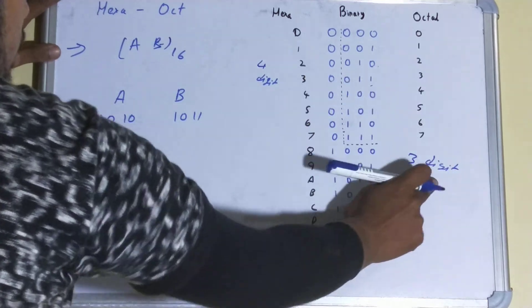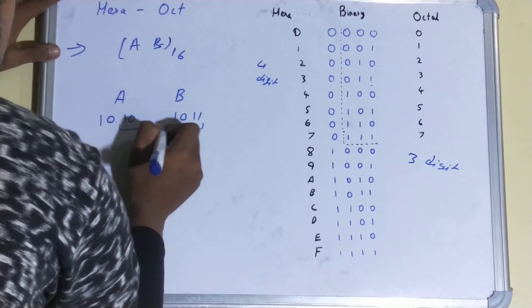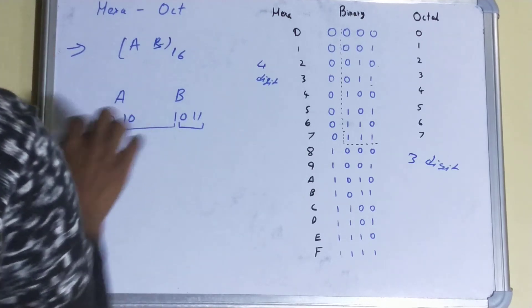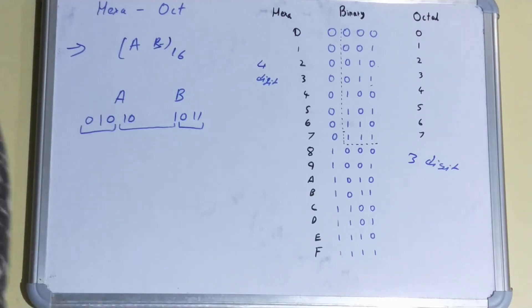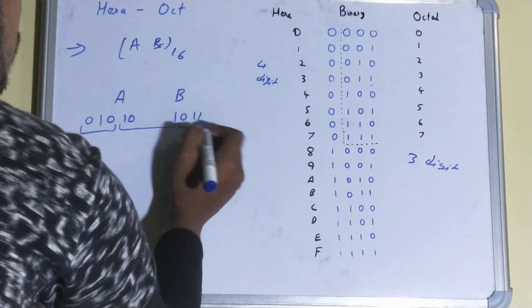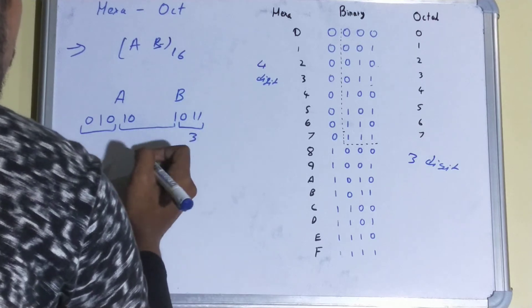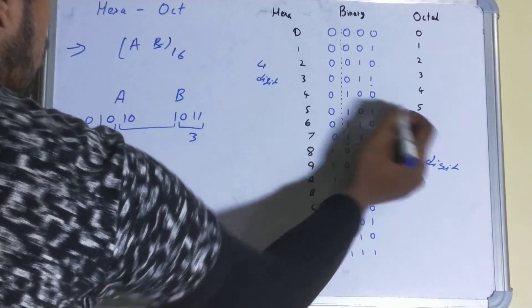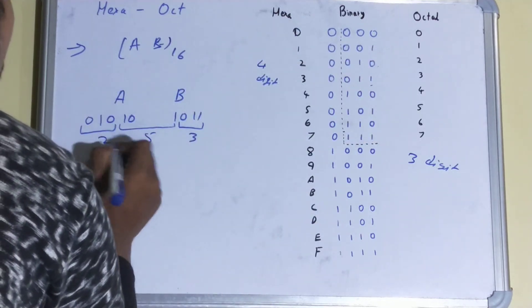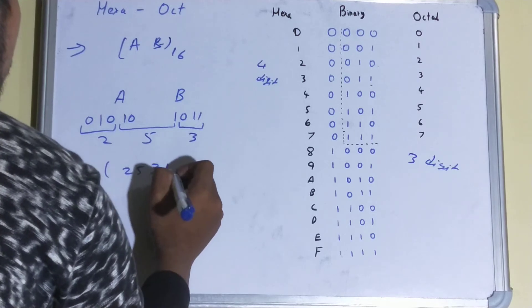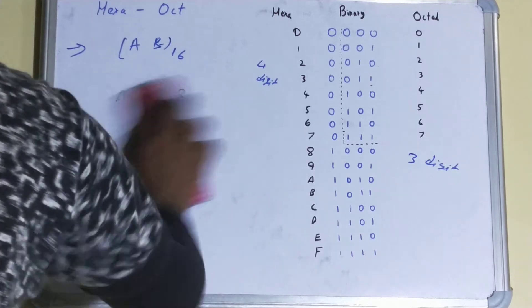You took that out. Right now what you'll do is for octal, because it is a three digit representation, you will make group of three like this, then this, and then this. Here you can see there are only two digits, so what you will do is you'll add zero. It will make no change to the value. Now you will match it with this table. So zero one one is three, then one zero one is five, and zero one zero is two. So your two fifty three base eight is your equivalent octal representation.